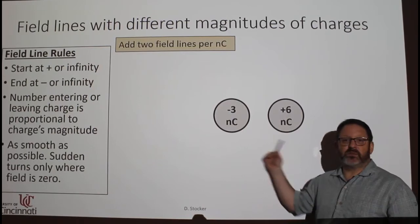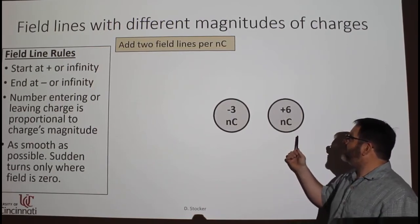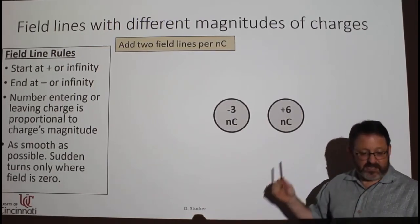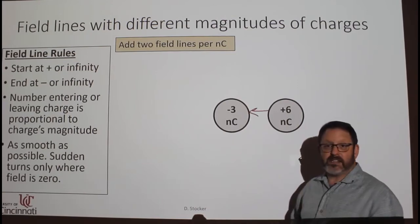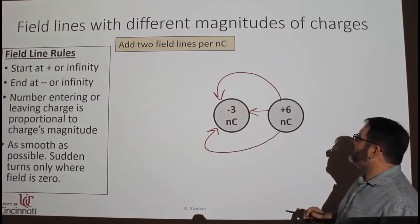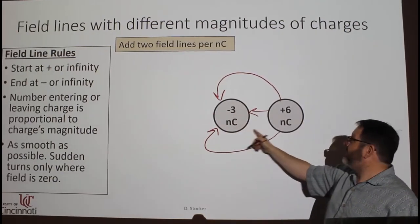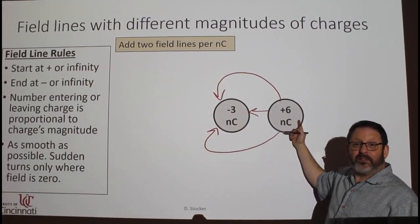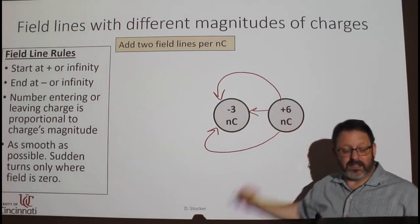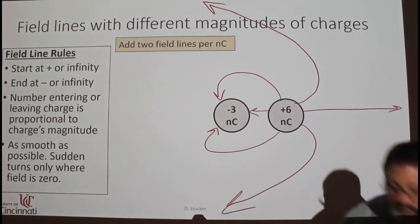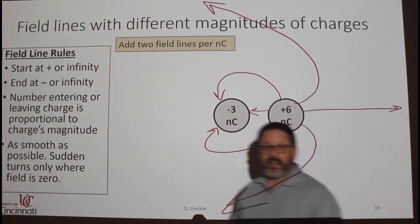What about the situation when the net charge is not zero? Well, in this case, it can start out the same. Something like that. Now, this one has taken in as many as it can. I still need to get three more out of here, so those three have to go to infinity. It will look something like that.